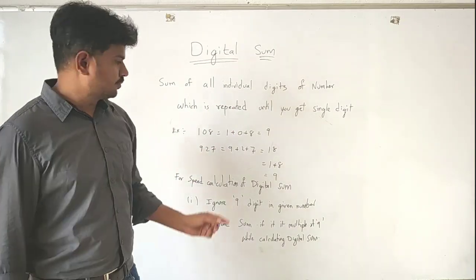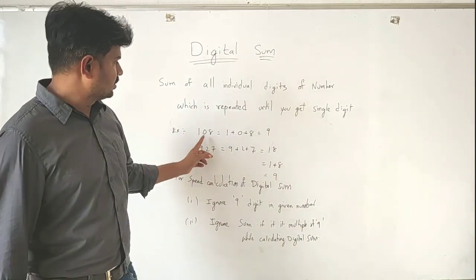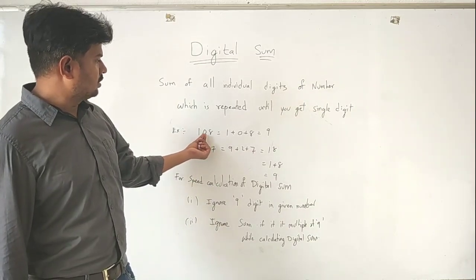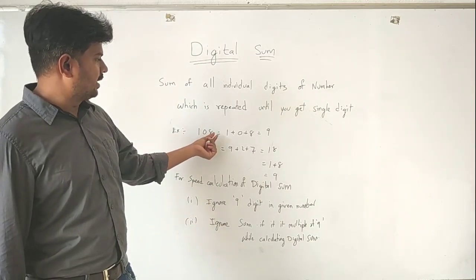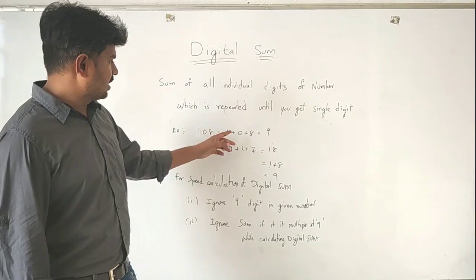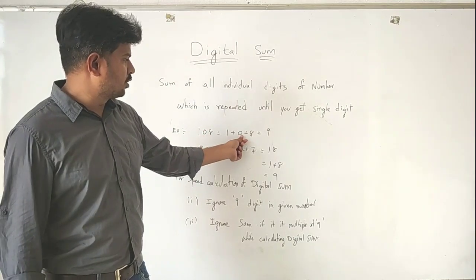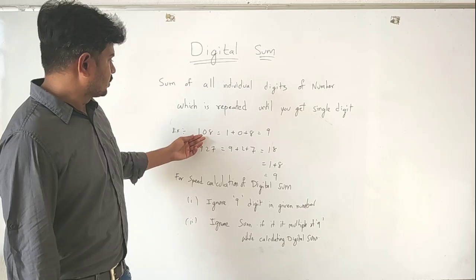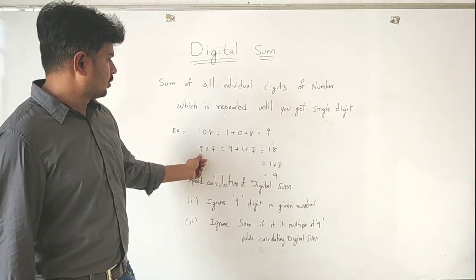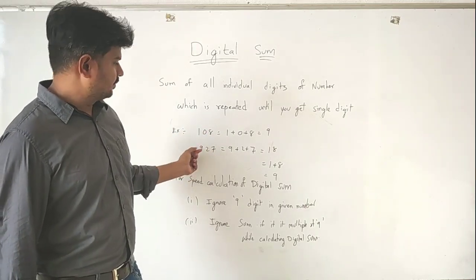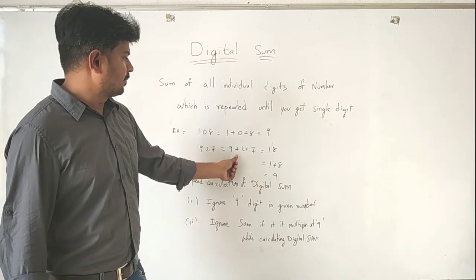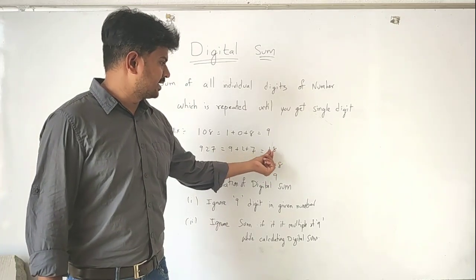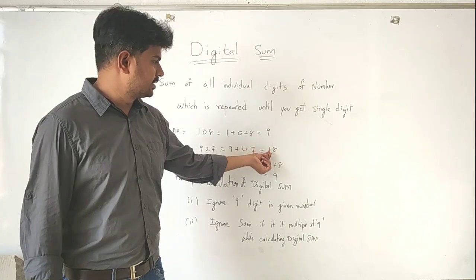Let me explain with an example. We have 108. The individual digits are 1, 0, and 8 — add them separately: 1 plus 0 plus 8 equals 9. Take another example: 927. Add individually — 9 plus 2 plus 7 is 18. The result has two digits.